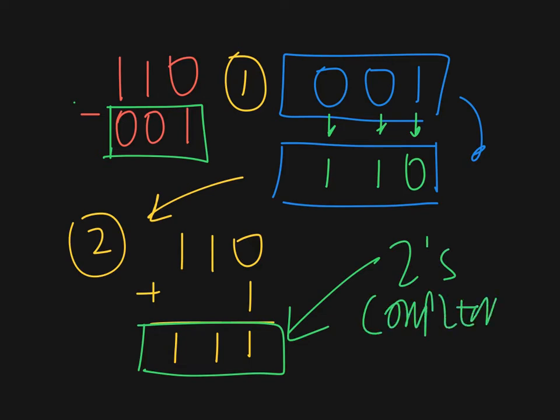Two steps involved. We converted it to the one's complement, then we took the one's complement and we added one. Standard procedure. So now we have 1, 1, 1, and let's add it to 1, 1, 0. OK, your notes and your handout follows the same procedure.